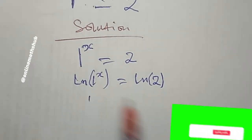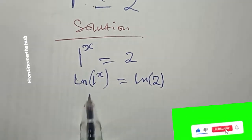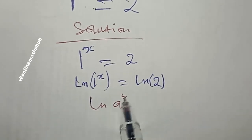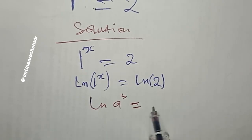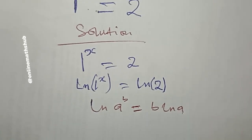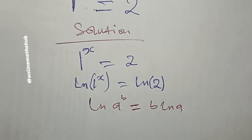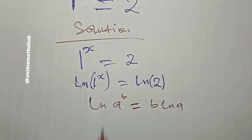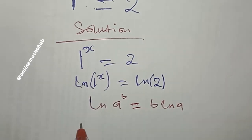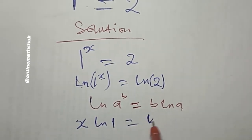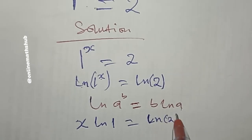The property of natural log says that when you have ln(a^b), you can bring down the exponent b so that it becomes b · ln(a). I'm going to utilize this to simplify. Bringing down the x, I have: x · ln(1) = ln(2).